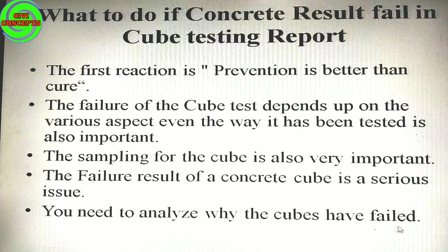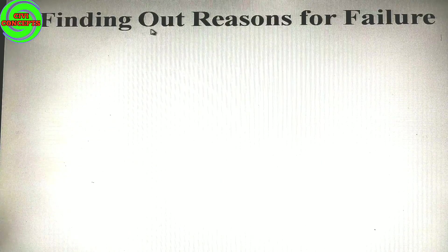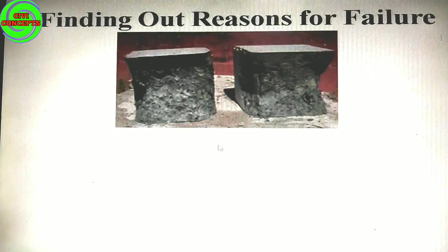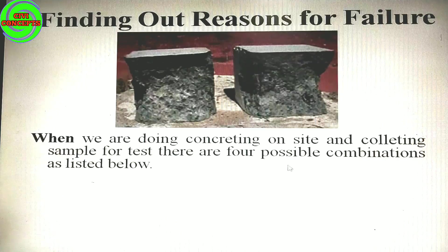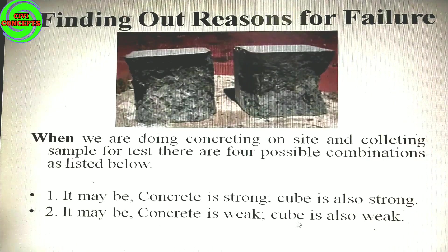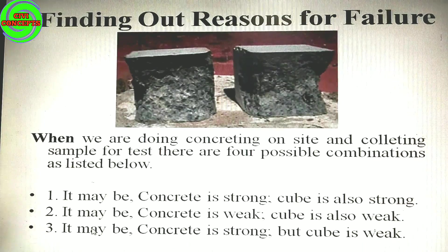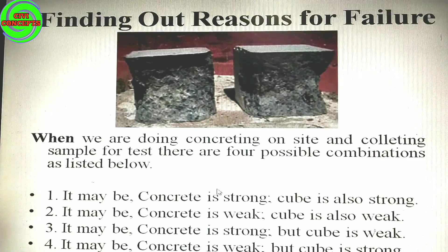We need to analyze why the cubes are failed — finding out the reason for failure. When we are doing concreting on site and collecting the sample for testing, there are four possible combinations resulting in failure: concrete is strong and cube is strong; concrete is weak and cube is weak; concrete is strong but cube is weak; or concrete is weak but cube is strong.